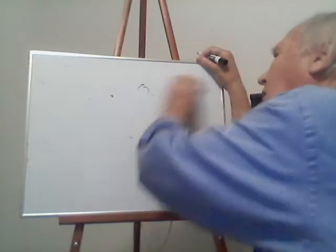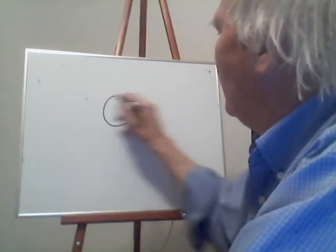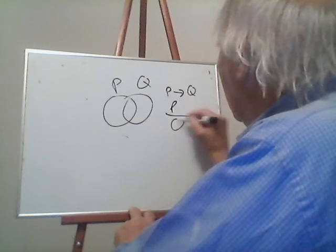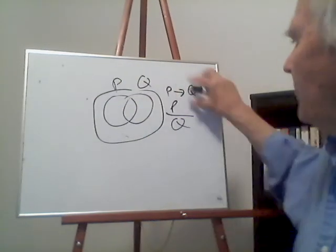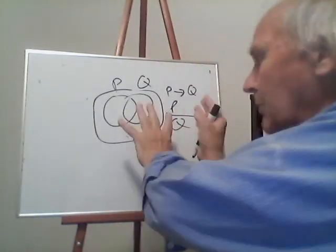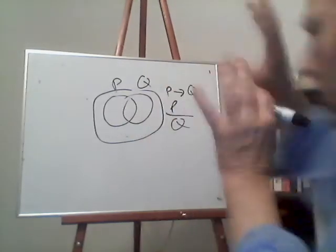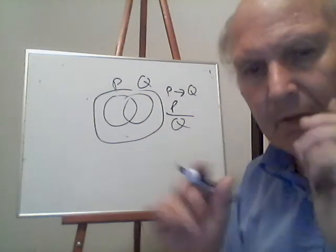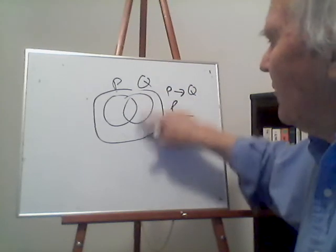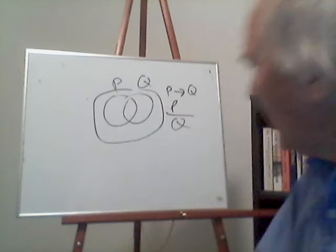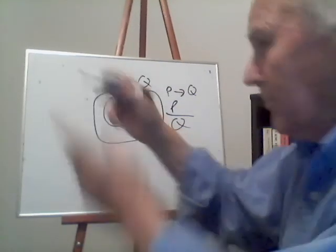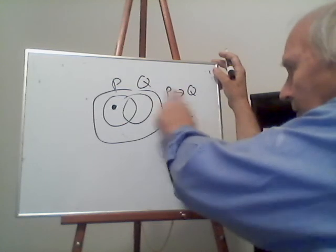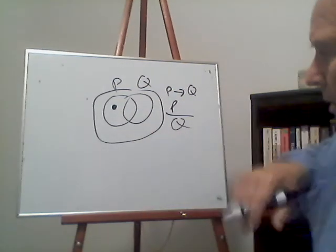Let me show you how to do the Venn diagrams for this argument — I'll develop this more in the next lecture. Here's how you diagram the argument: you diagram the two premises and do not diagram the conclusion. Once you've diagrammed the premises, you stand back, look at the picture, and ask: do we know that Q is true? Do we know we have to be in the Q circle? For P arrow Q, you darken everything inside the P circle but outside Q, since the only time it's false is there.